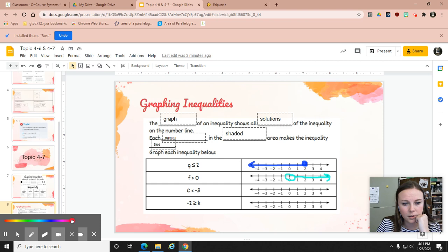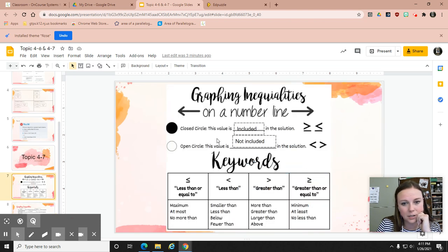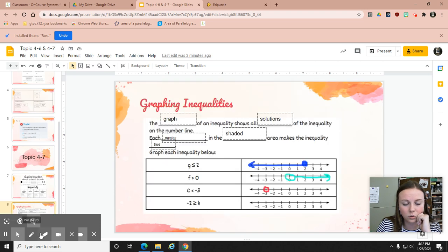Our next one, C is less than negative 3. So again, I'm just going to put my circle on negative 3. Does it need to stay open or closed? It's going to stay open because it's a symbol without the equal to part, so we're not going to include it in our solution.